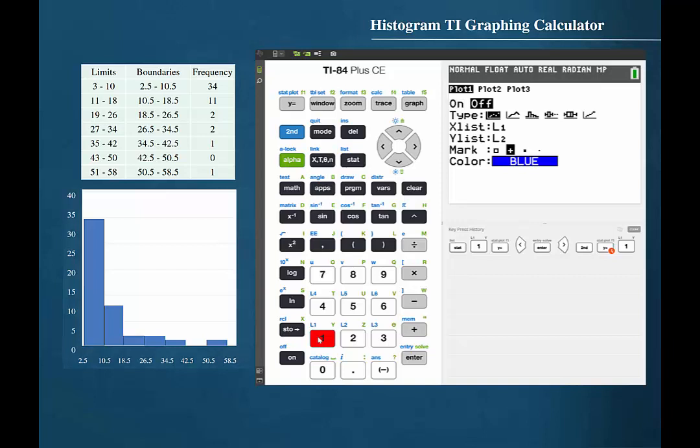We should begin by turning this plot on. Make sure that the cursor is blinking on the on selection and press enter. Cursor down and then over until the histogram icon is highlighted and press enter. Cursor down and make sure that the correct list is specified. Our data are in list 1. Now press the graph button.